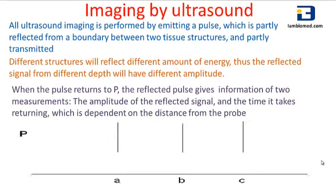When the pulse returns to P, the reflected pulse gives information of two measurements: the amplitude of the reflected signal, and the time it takes to return, which is dependent on the distance from the probe.